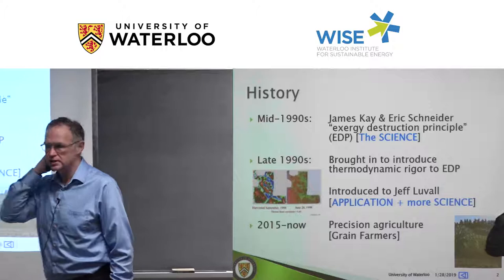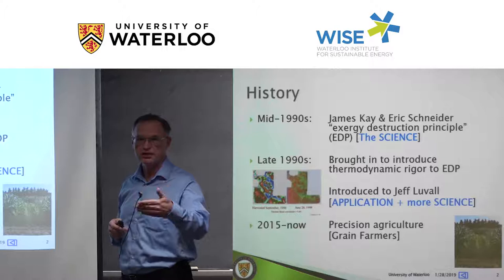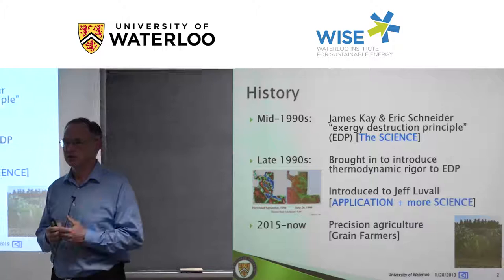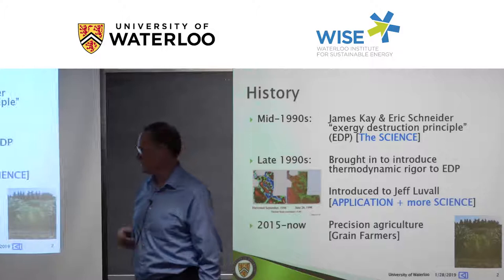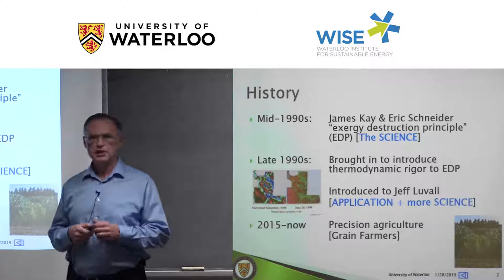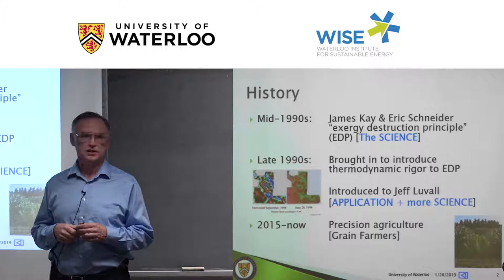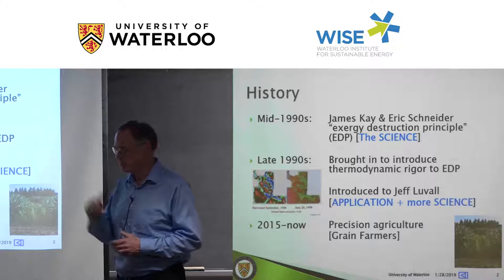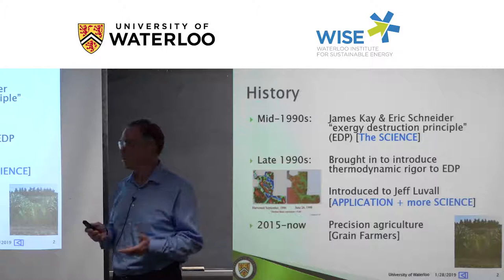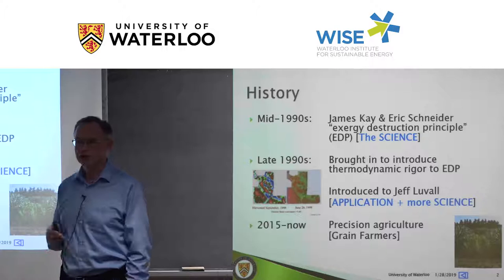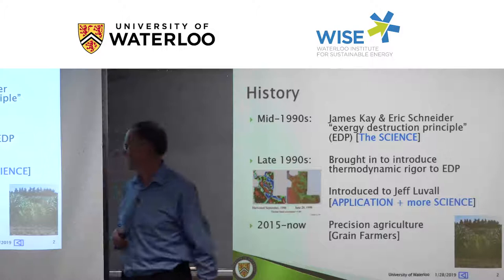A bit of history: in the mid-1990s, Professor James Kaye and Eric Schneider — director of NOAA in the U.S. — developed the idea of maximum utilization of exergy. In the late 1990s, initial work was done with colleague Jeff Lubell of NASA Marshall, looking at some agriculture systems and heat islands. For example, flying a plane over Atlanta with an infrared camera and making observations — interesting findings that have led to current work in agriculture today.